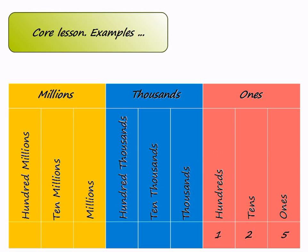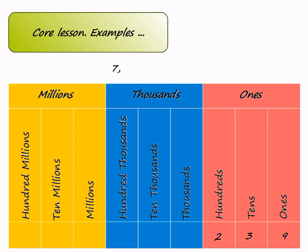Let's see another example: 7239. One by one we place the given digits in their respective place values. We start writing from the right, so 9 goes at the ones place, then 3 goes at the tens place, after that 2 goes at the hundreds place, and finally 7 goes at the thousands place.